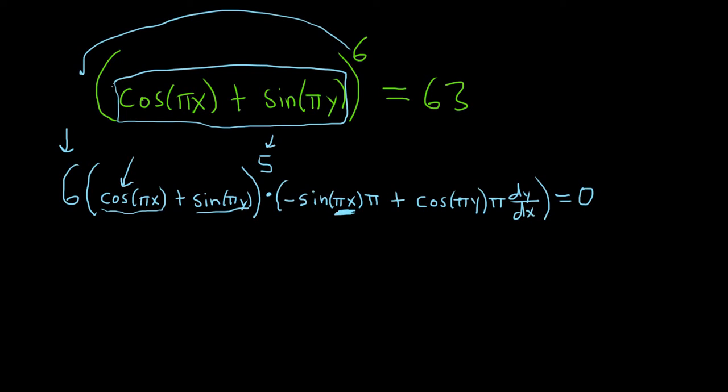And then here, the derivative of sine is cosine. So you get cosine πy, and then times the derivative of πy. The π is a constant that hangs out, and the derivative of y is dy/dx.